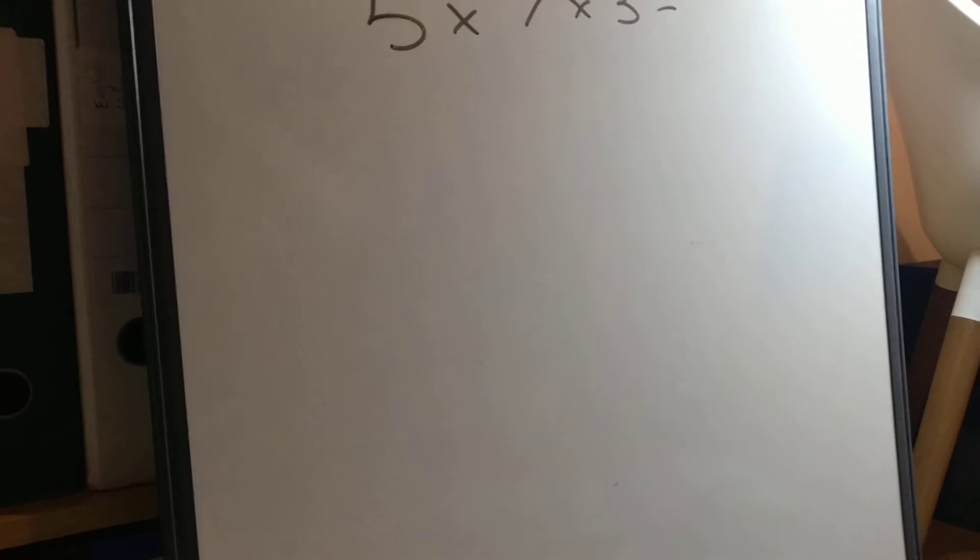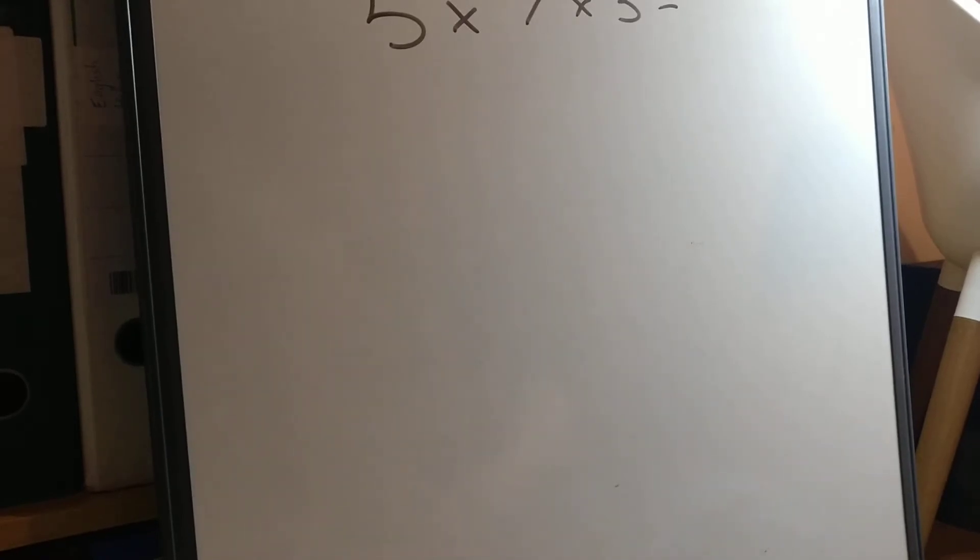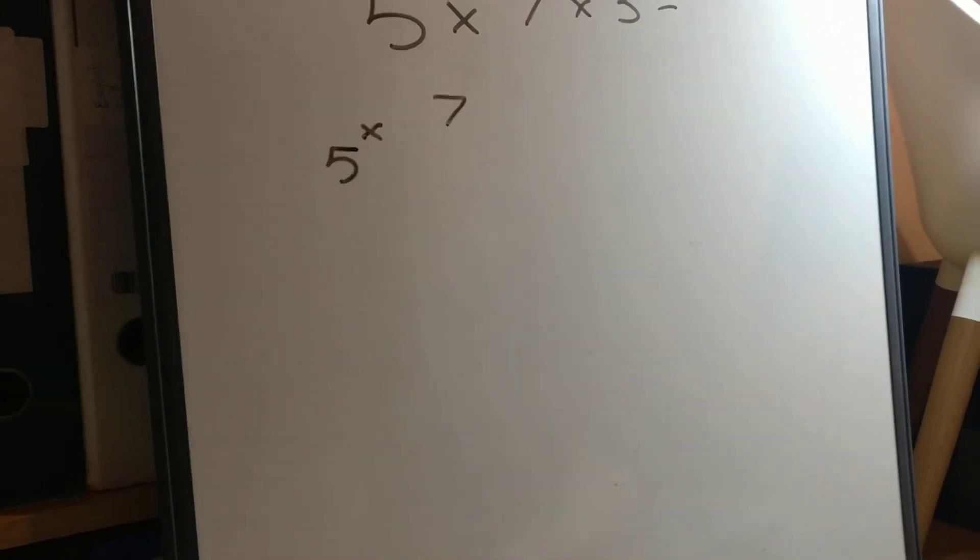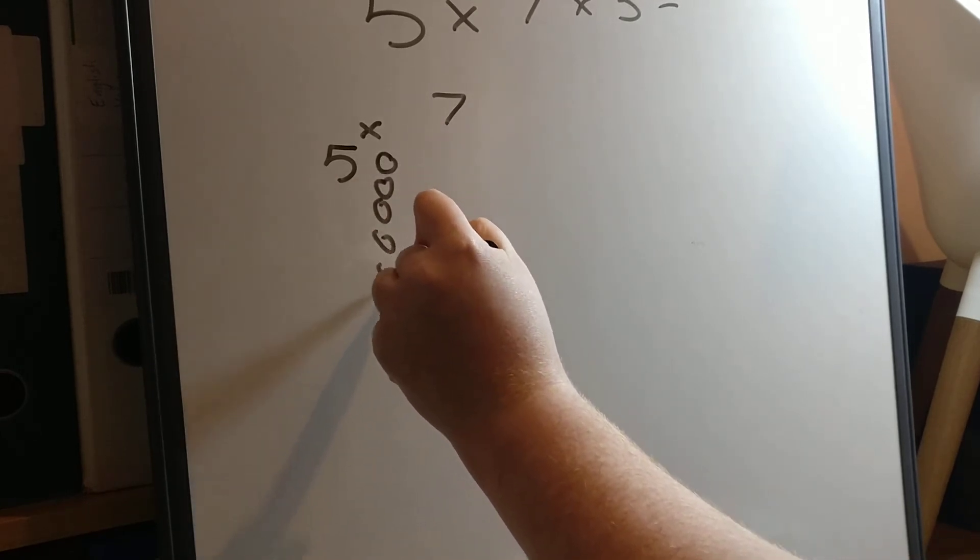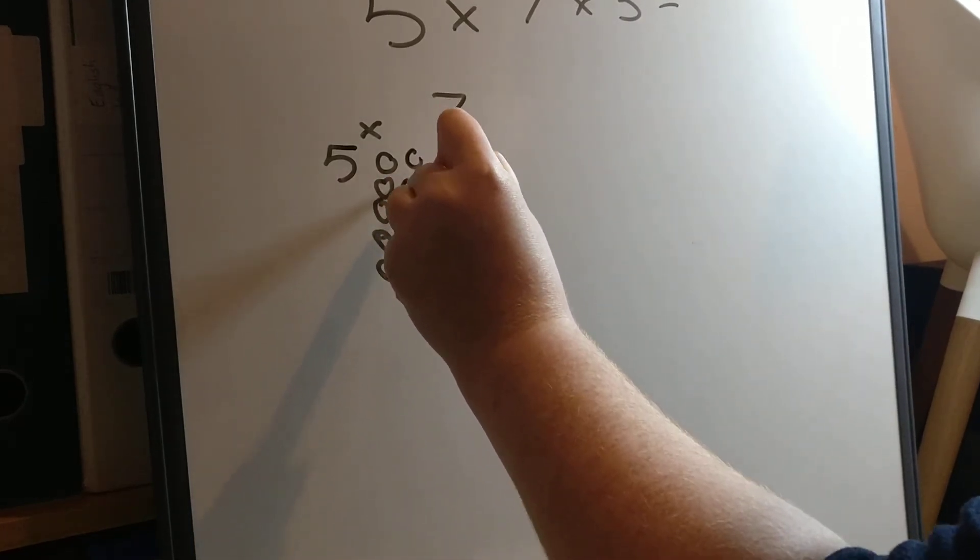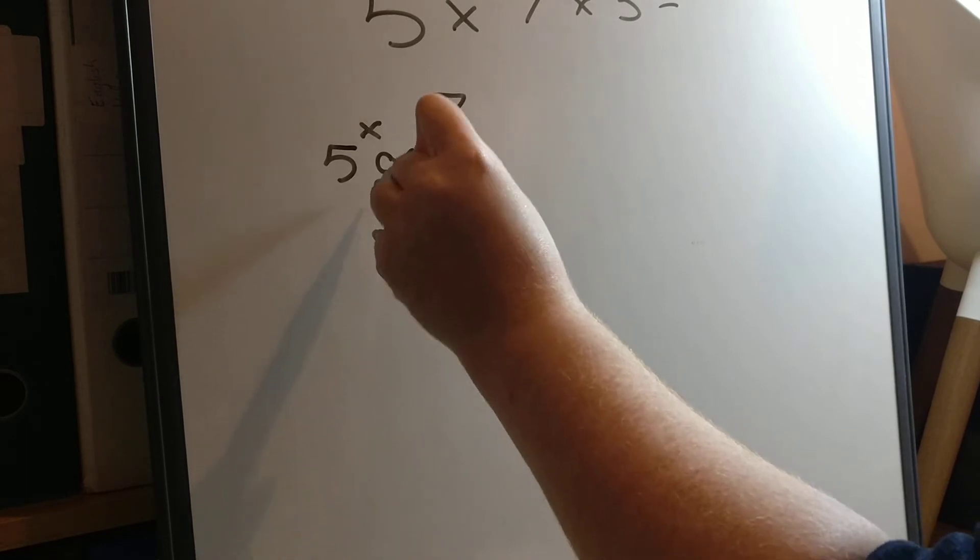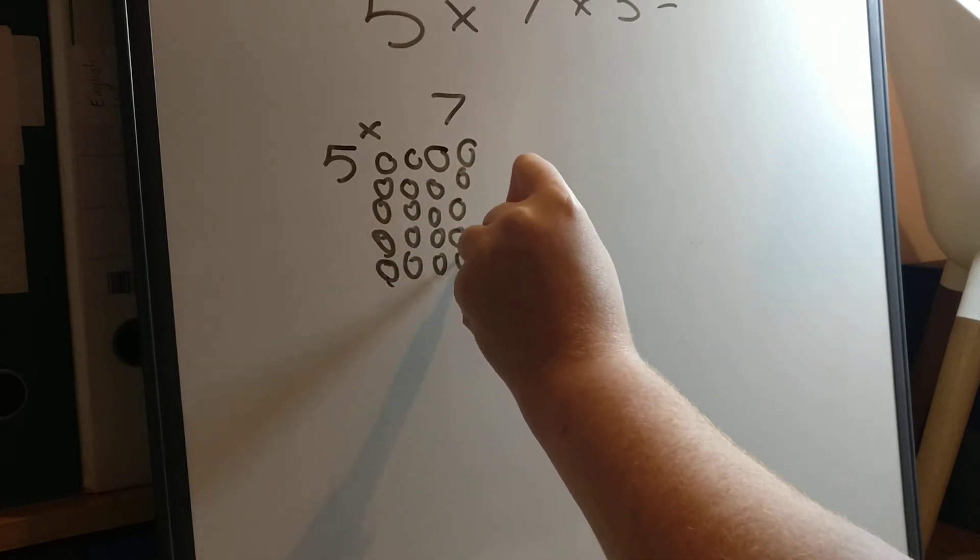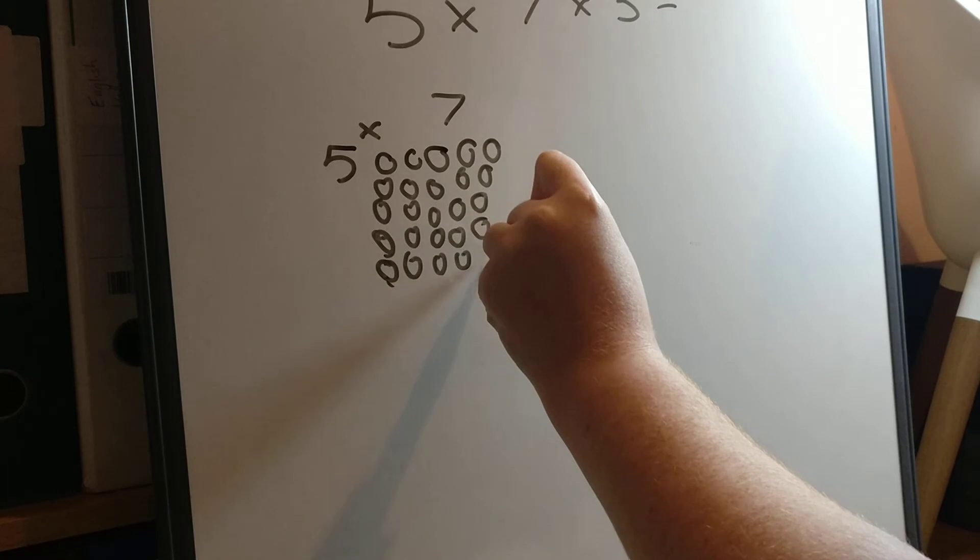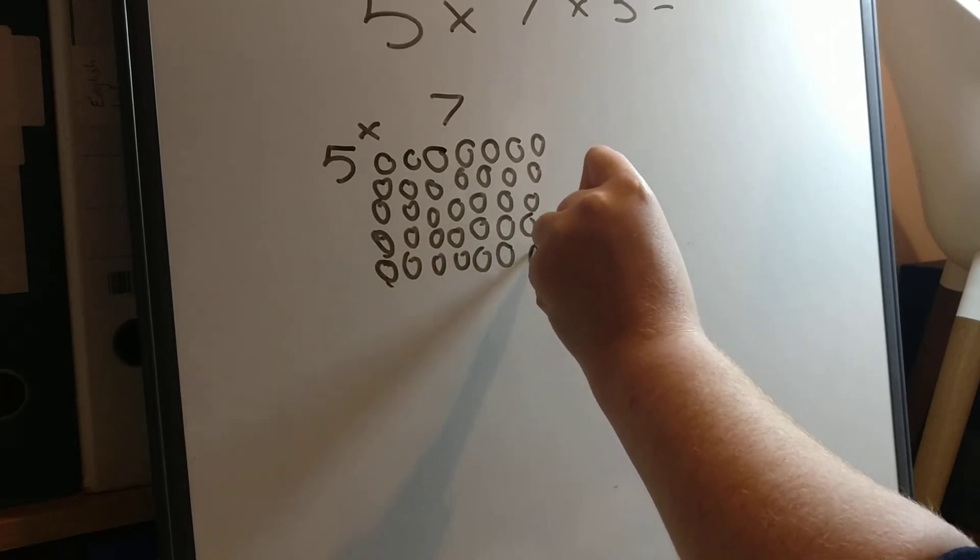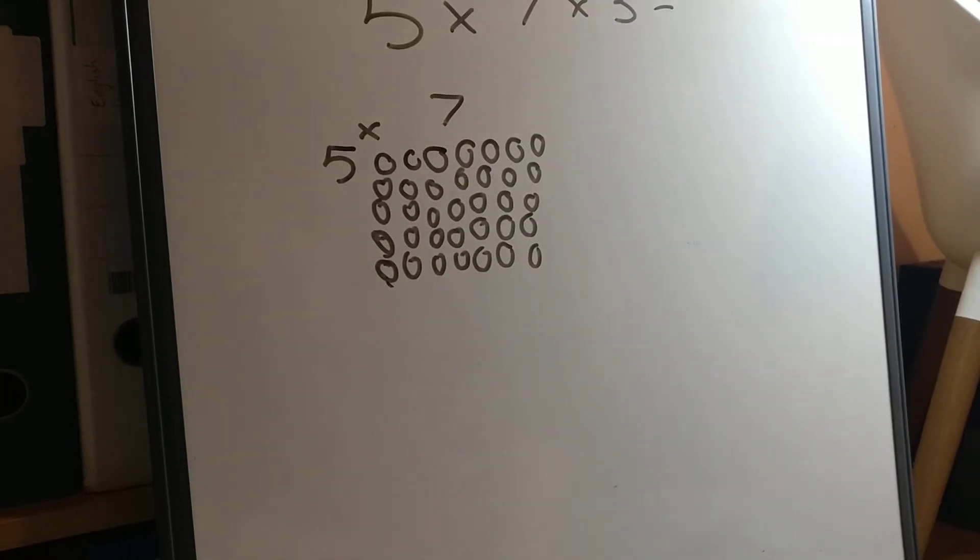Let's just start with 5 times 7. Oh, we've gone out of focus. There we go. So let's just start with 5 times 7 and start this question. Because we can all do 5 times 7 as an array. Five. Five. Five. Because it's five counters seven times. Five lots. Two lots of five. Three lots of five. Four lots of five. Five lots of five. Six lots of five. Seven lots of five.